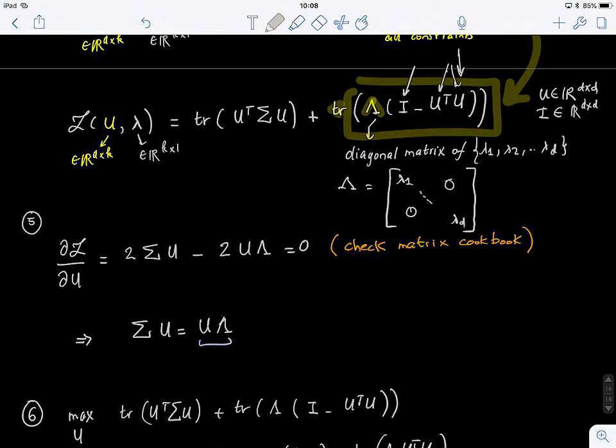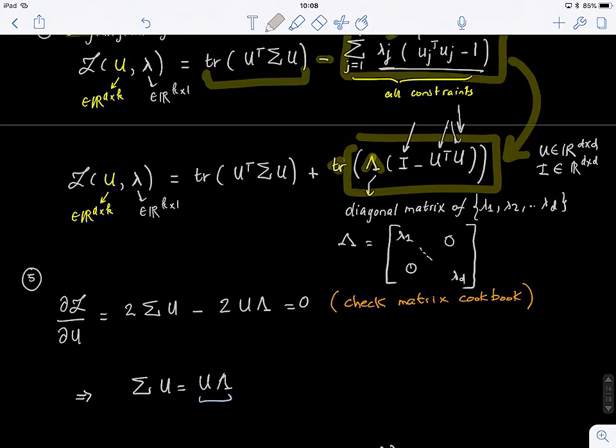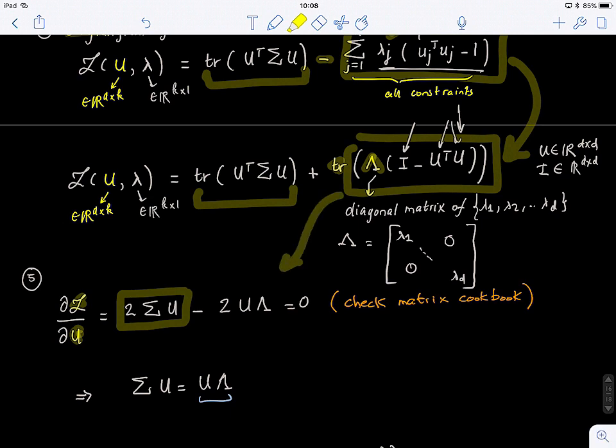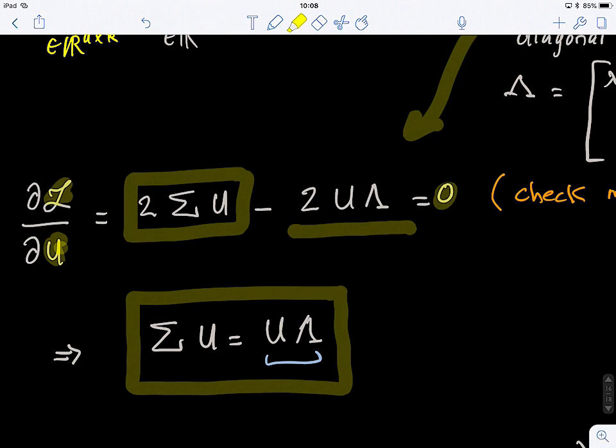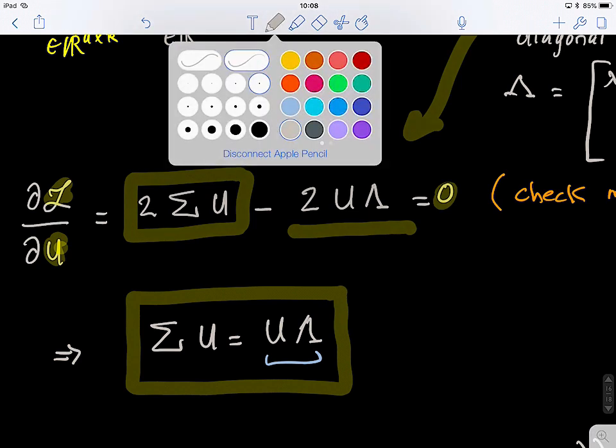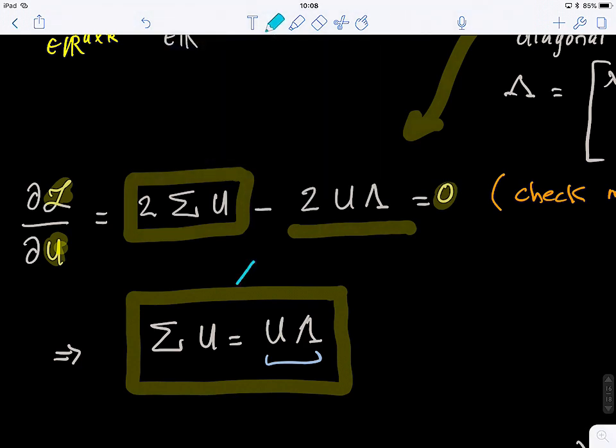So next, what we do is we solve the primal problem. So we compute the derivative, now it's quite interesting, of the Lagrangian with respect to what? A matrix. So deriving this, we use just the matrix cookbook. You have ready-made formula, you just plug them in. And when deriving the first term, you get 2 Σ U. And when deriving the second term, we get minus 2 U times lambda. So when we set this to 0, what do we get? We get this. We get Σ U equals to U lambda.